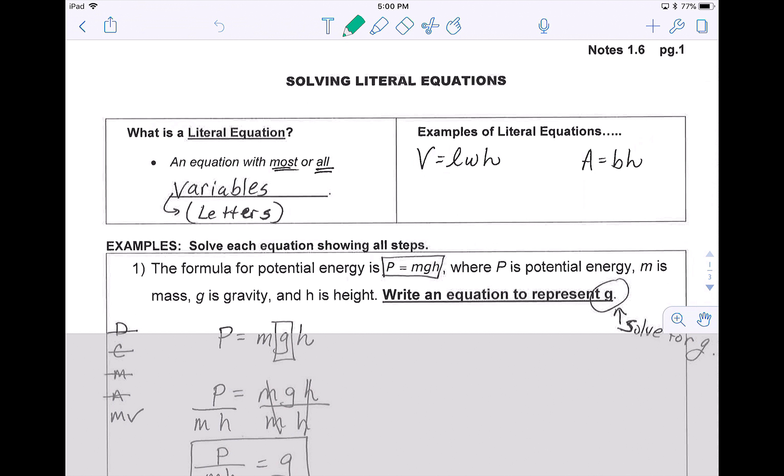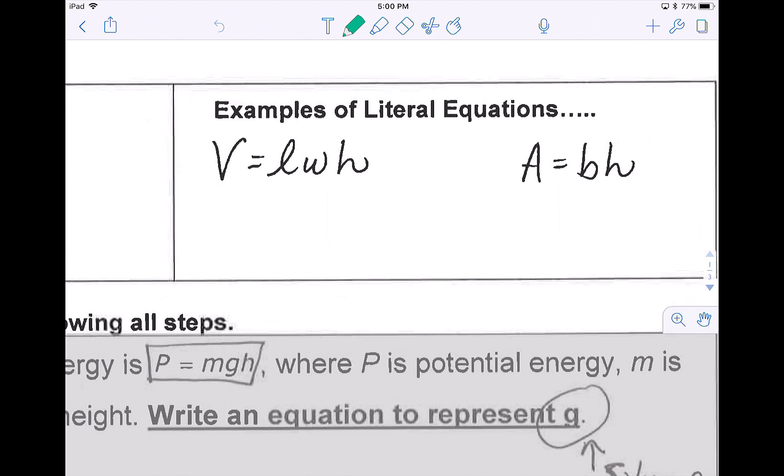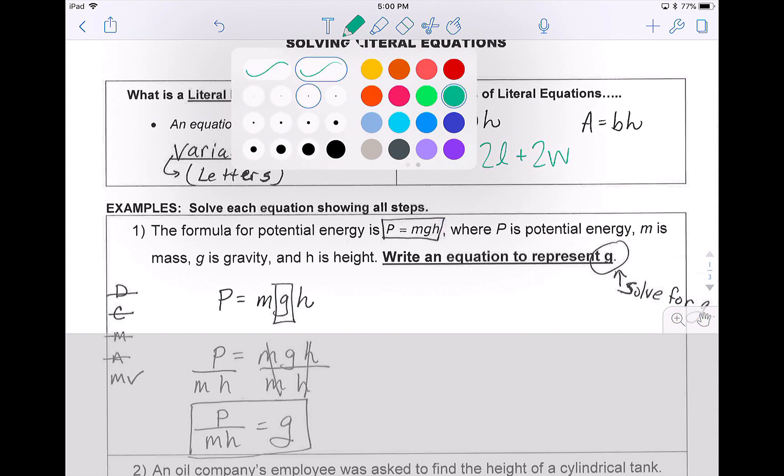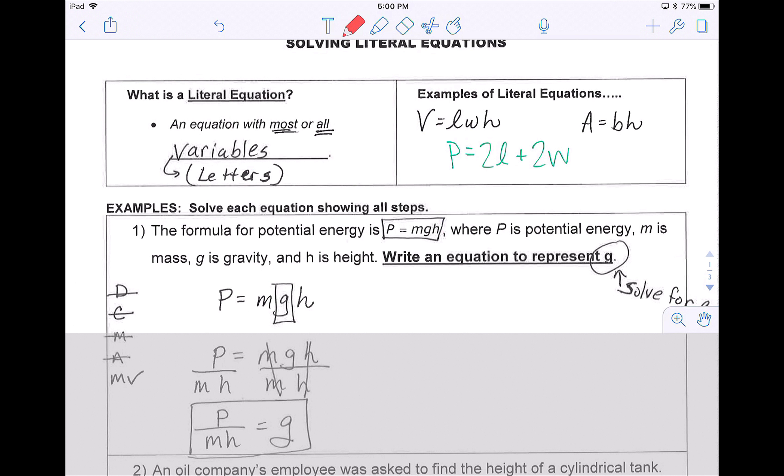Examples of literal equations can be seen right here to the right. Volume equals length, width, and height. Area equals base times height. If you deal with perimeter, perimeter is two lengths plus two W's. That would be another literal equation. So literal equations can be anything that you've seen. They happen a lot in science.